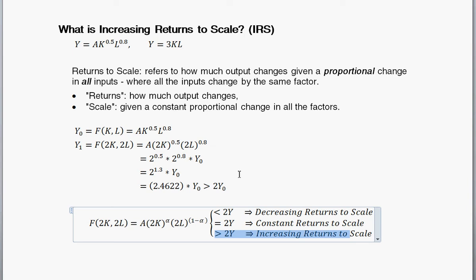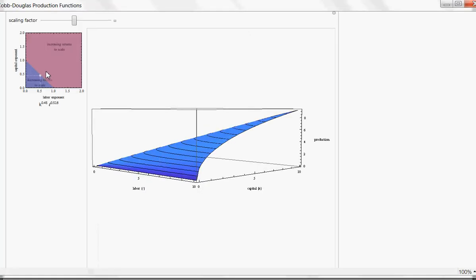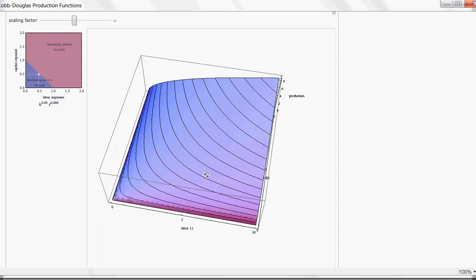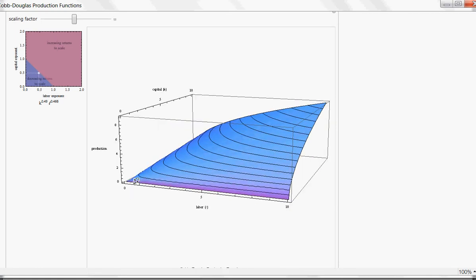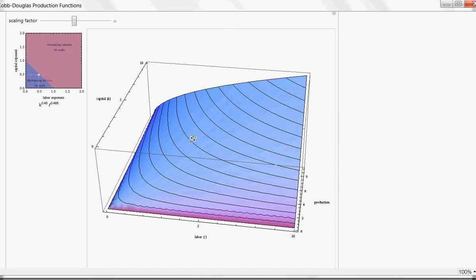Another way to think about it, which may be confusing to you, but hopefully not, is a given production function like this. So, on the vertical axis is the amount of production, the x-axis is the amount of labor, and then the z-axis here is the amount of capital. This tells you how much production given any combination of labor and capital.